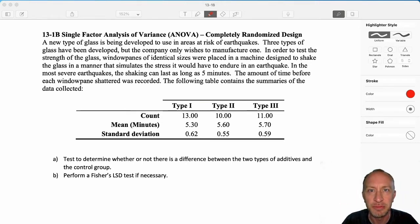This is our second exercise. If you've watched the introduction to this segment, you have a fairly good idea of the methodology. A new type of glass is being produced to use in areas at risk of earthquakes. Three types of glass have been developed, but the company only wishes to manufacture one. In order to test the strength of the glass, window panes of identical sizes were placed in a machine designed to shake the glass in a manner that simulates the stress it would endure in an earthquake. In the most severe earthquakes, the shaking can last as long as five minutes. The amount of time before each window pane shattered is recorded. The following table has our summary statistics.